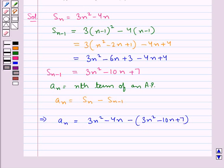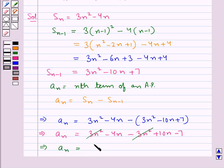A_n = 3n² - 4n - (3n² - 10n + 7). So further we get A_n = 3n² - 4n - 3n² + 10n - 7. 3n² - 3n² cancels. Then 10n - 4n would be 6n. So we have A_n = 6n - 7.